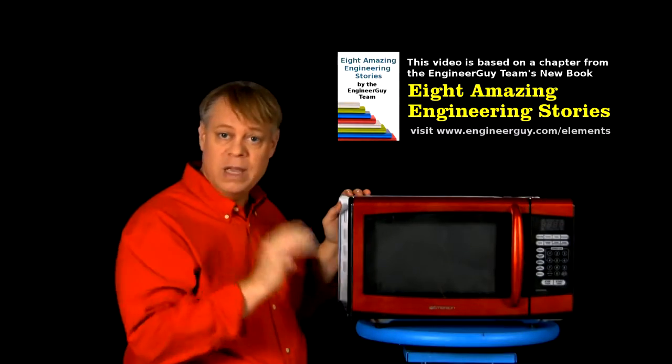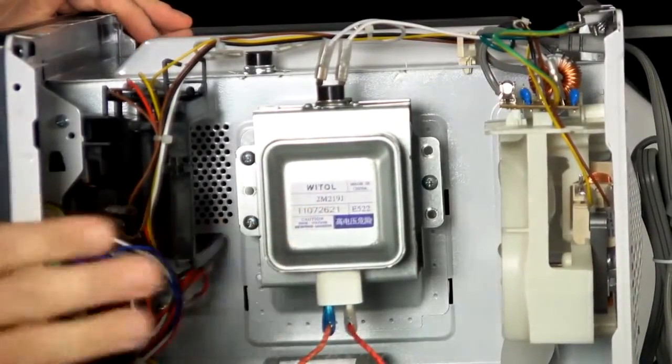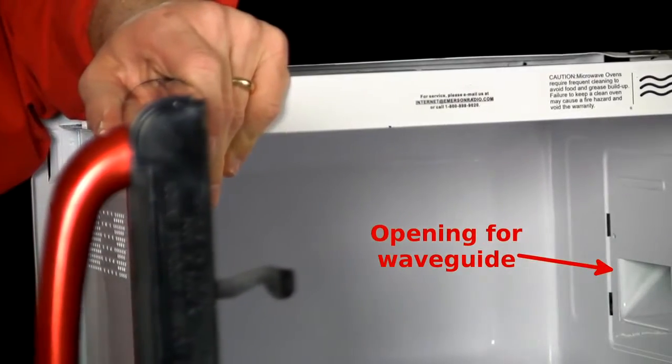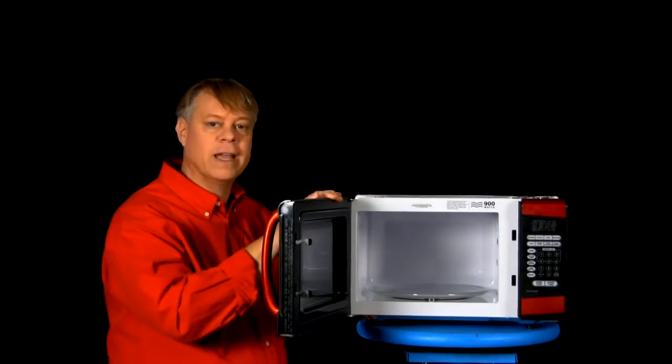A microwave contains three main components. A vacuum tube called a magnetron, it generates the energy that heats food, a waveguide hidden in the wall to direct that energy to the food, and a chamber to hold the food and safely contain the microwave radiation.